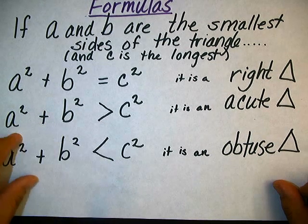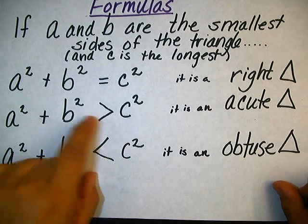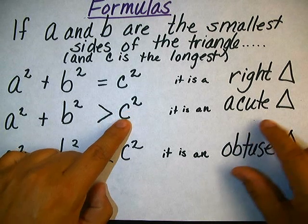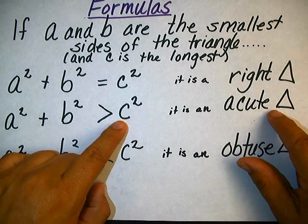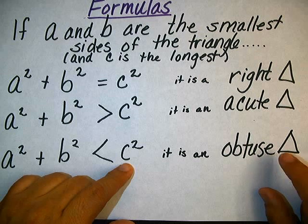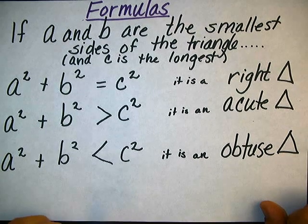If C squared is too small for these, if these two are greater than that, then it is an acute triangle because C squared is too small. If C squared is too big, it is an obtuse triangle.